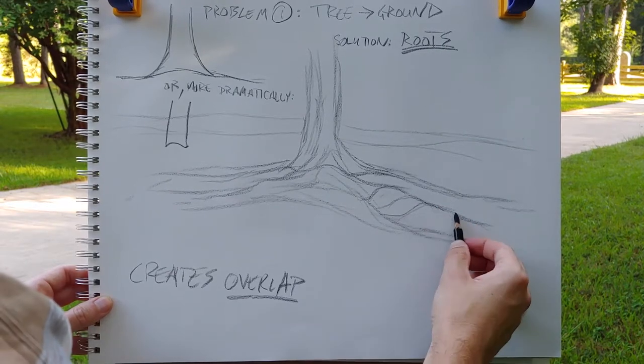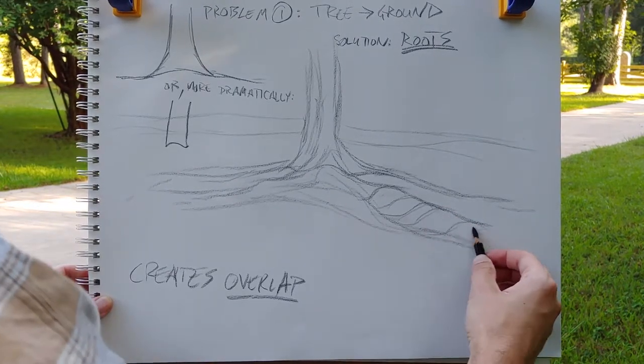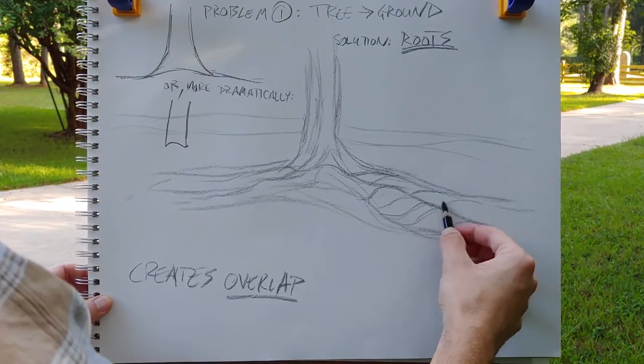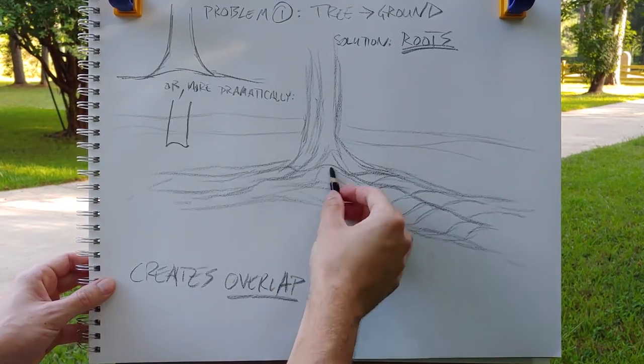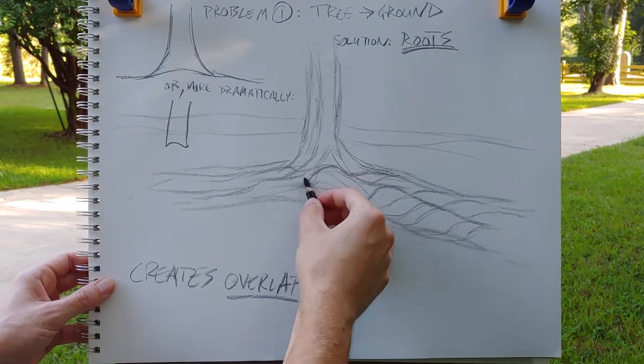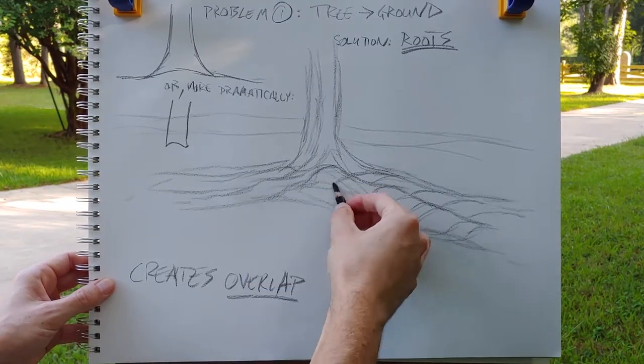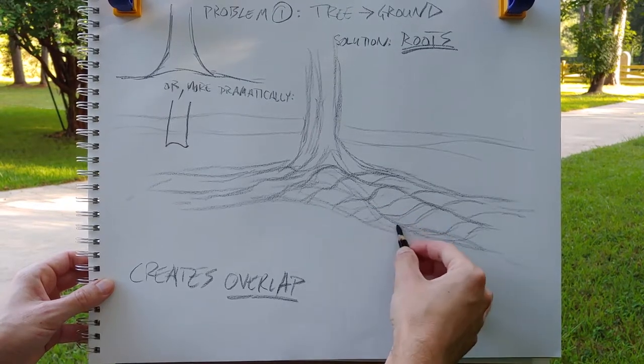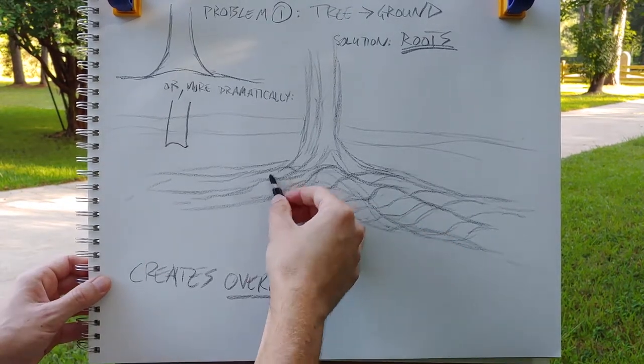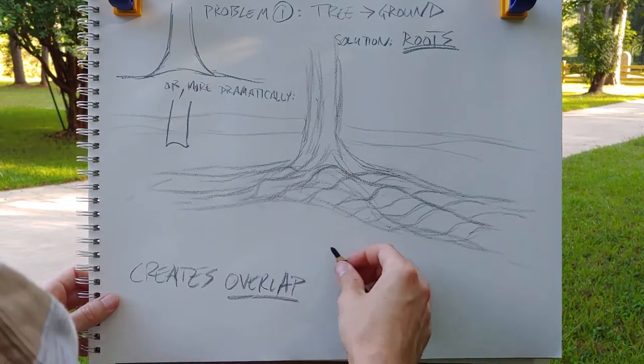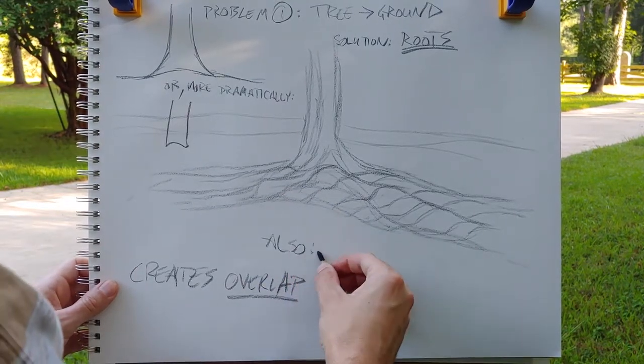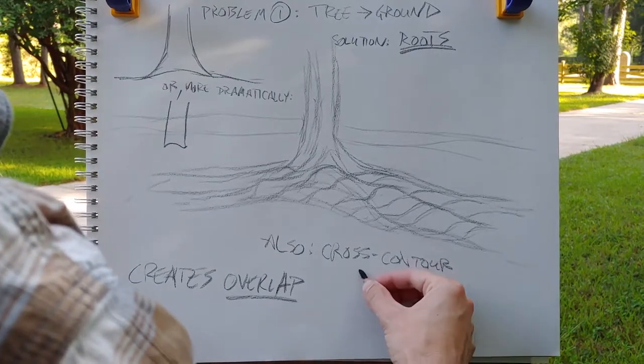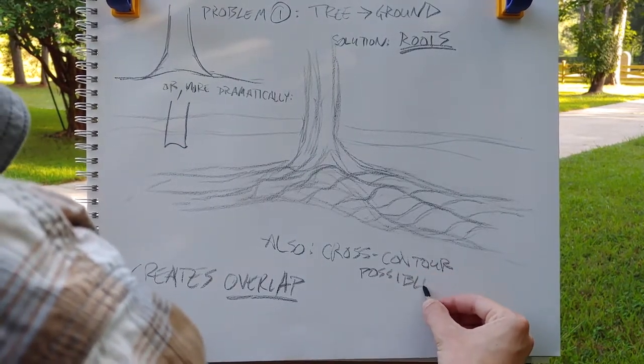Your solution part two is to actually use some cross contour lines and describe how those roots are curving and pushing the ground up in more than just one direction. So you're creating basically sort of two systems of overlap when you do this and it creates a really successful root system to the tree and sets you up for a great landscape.